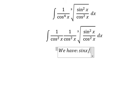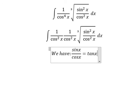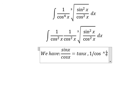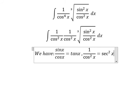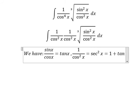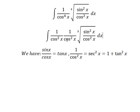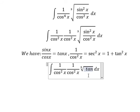Sine x over cosine x equals to tan x. 1 over cosine x square equals to secant x square, and this one equals to 1 plus tan x square. So this one we can change into tan x square.